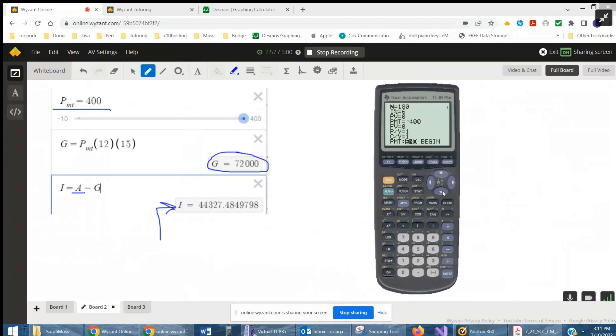And we want to know the future value in 15 years. But we've got to put the compounding interval. Payments per year is 12. Position on future value and click alpha, enter.